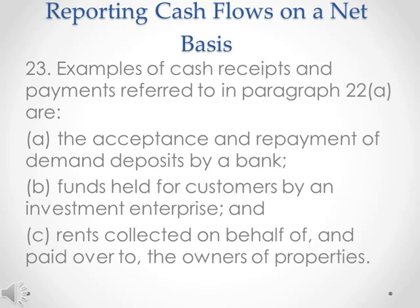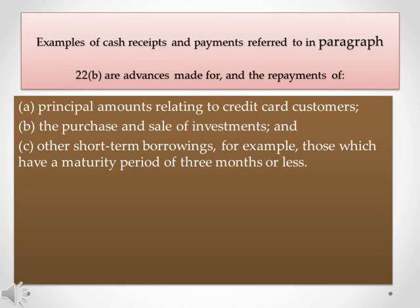Paragraph 23. Examples of cash receipts and payments referred to in paragraph 22 are: A. The acceptance and repayment of demand deposits by a bank; B. Funds held for customers by an investment enterprise; and C. Rents collected on behalf of and paid over to the owners of properties. Further examples are advances made for and the repayments of: A. Principal amounts relating to credit card customers; B. The purchase and sale of investments; and C. Other short-term borrowings, for example, those which have a maturity period of three months or less.